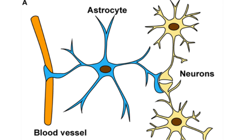Astrocytes also act as phagocytes by taking up degenerated synaptic terminals. If a neuron dies due to any reason or disease, the astrocyte will proliferate and fill the space previously occupied by that neuron. This process is called replacement gliosis.